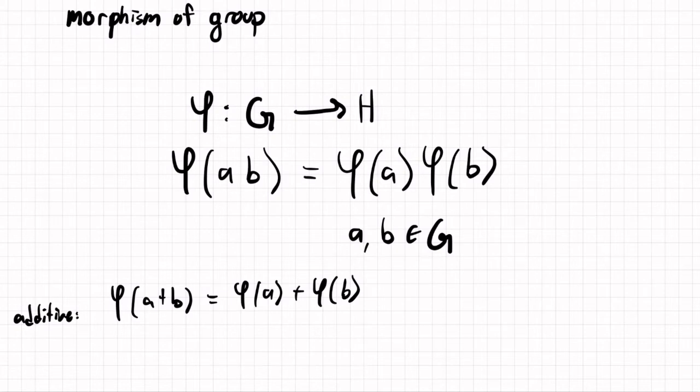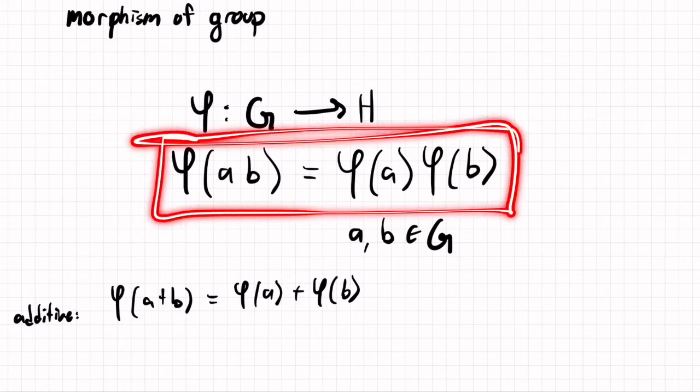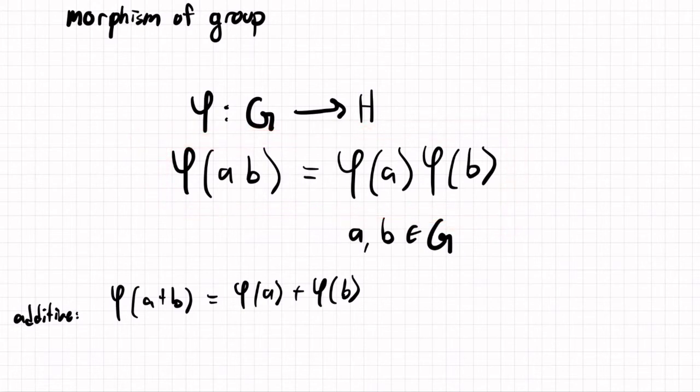And similarly, if one of the groups is additive and the other one is multiplicative, you can write down a symbol. But really, when you're thinking of an abstract group, we think of the multiplicative group, and we use this condition. But it's the same thing, it's just notation.